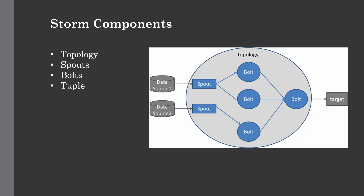The next component is spouts. A spout is nothing but a source of a stream. Generally, Storm accepts input data from various sources like the Twitter Streaming API, Kafka, or Kestrel queue. You can also write spouts to read data from various data sources. The ISpout is the core interface for implementing spouts. Then we have bolts — bolts are the logical processing units. The spout passes data to the bolts, and bolts process it and produce a new output stream.